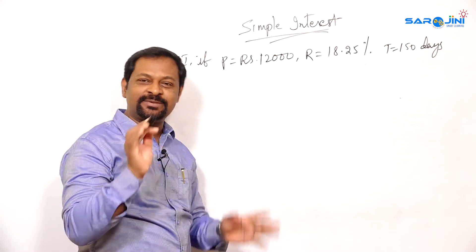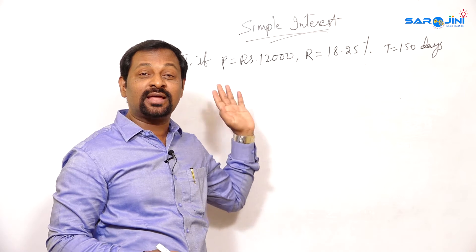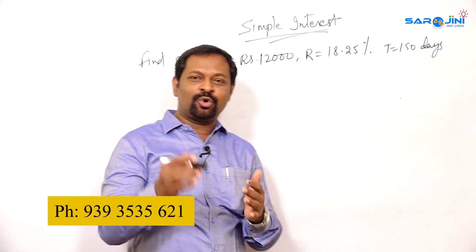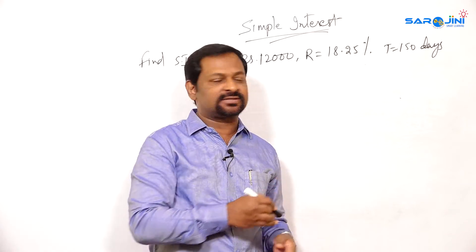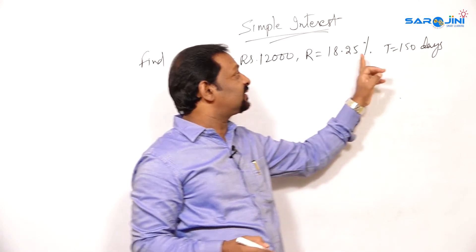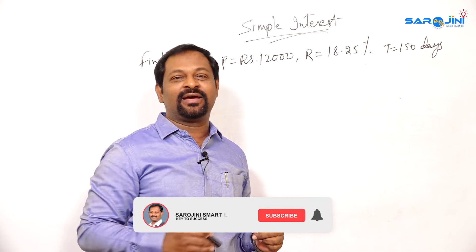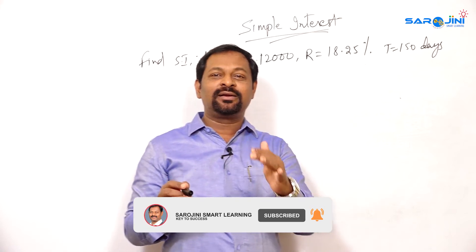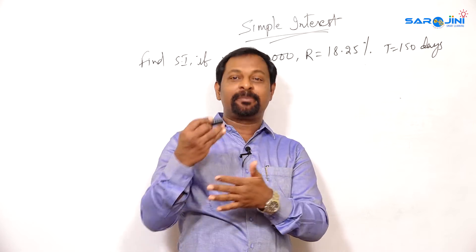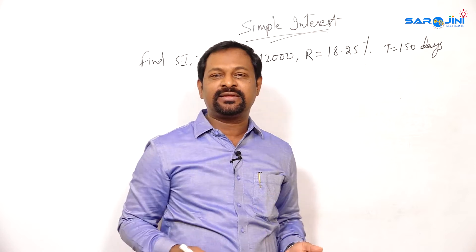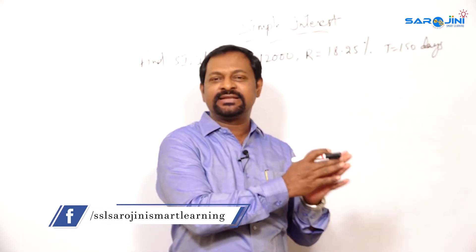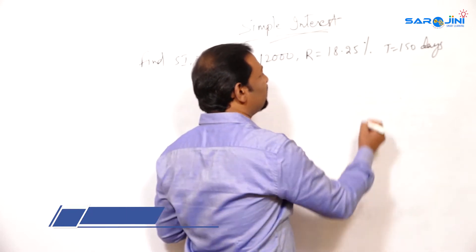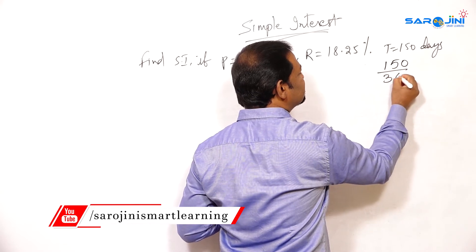We check one more question. You have to find out the simple interest only. The principal amount is 12,000 rupees. What is the rate of interest? 18.25 — like if you go to banks, they will charge like 8.75 or 9.25; in decimal format they calculate the rate of interest. And the time is 150 days. As I already told, the time should always be calculated per annum, that is yearly. If it is in months we divide by 12, because 12 months are in a year. Now the question is given in days — how many days are there in a year? On average 365 days. So here the given number is 150, so I can convert this as 150 by 365 years.